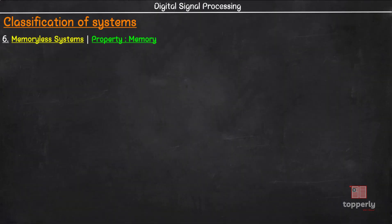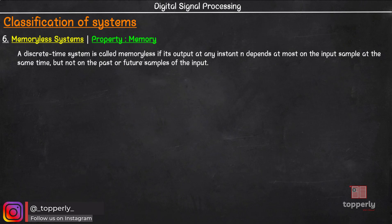First we will see what are memoryless systems. A discrete time system is called memoryless if its output at any instant n depends only on the input sample at the same time. There should not be any dependence for the output on the past and future samples of the input.